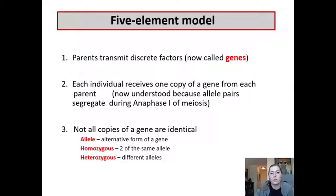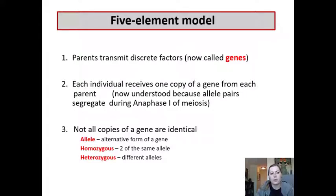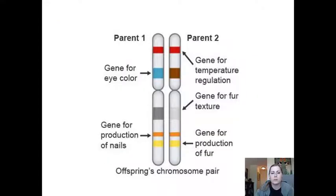To explain this, we go over the five-element model. Number one: parents transmit discrete factors — now called genes. Number two: each individual will receive a copy of each gene from each parent. Number three: not all copies of the gene are identical — alleles are alternative forms of a gene. Homozygous alleles means two of the same gene, while heterozygous means two different alleles.